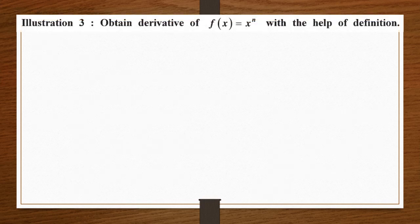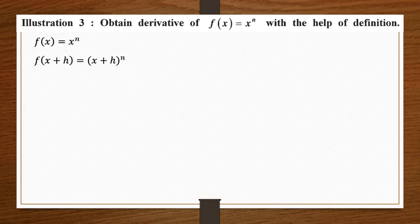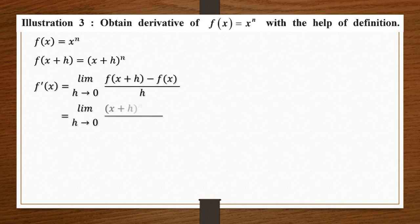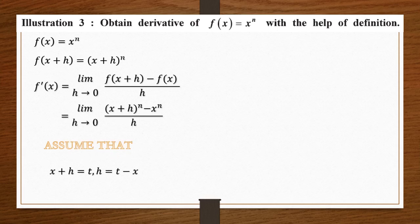Illustration 3: obtain the derivative of x raised to n, where n is an unknown power. f(x) = xⁿ, and f(x+h) = (x+h)ⁿ — we replace x with x+h everywhere. Since the power is unknown we cannot expand directly, so we substitute as-is: limit h tends to 0, [(x+h)ⁿ − xⁿ] upon h. We now use the substitution concept: let t = x + h, so h = t − x.